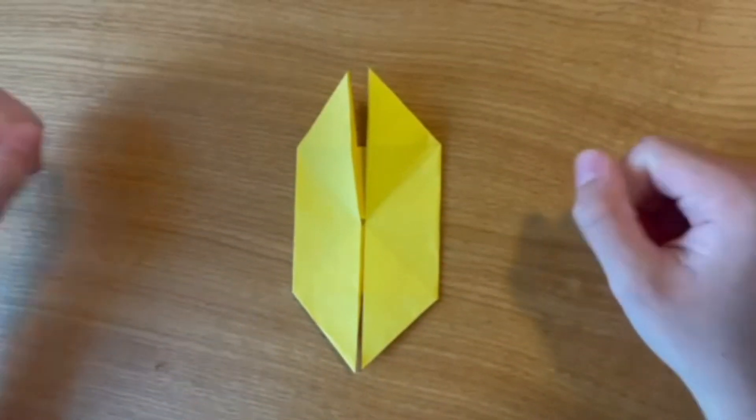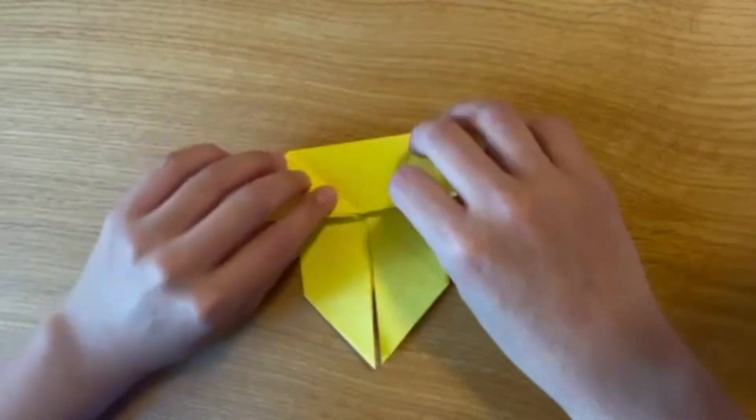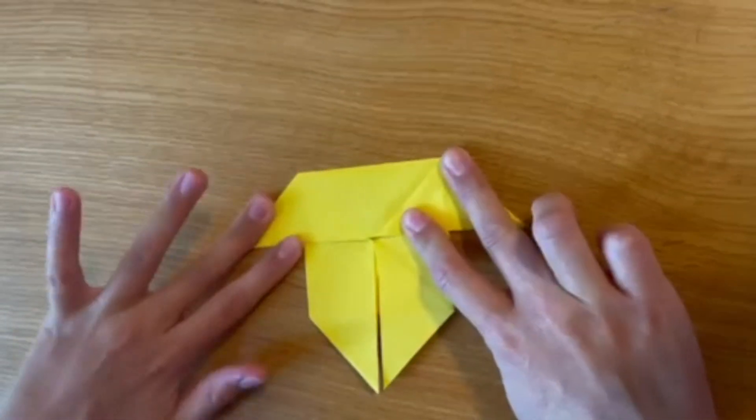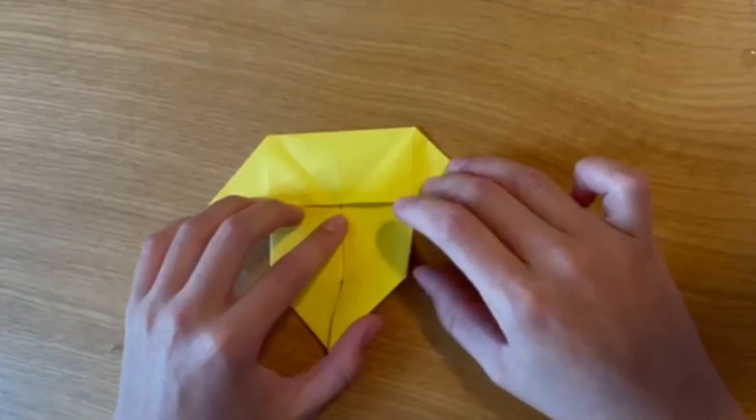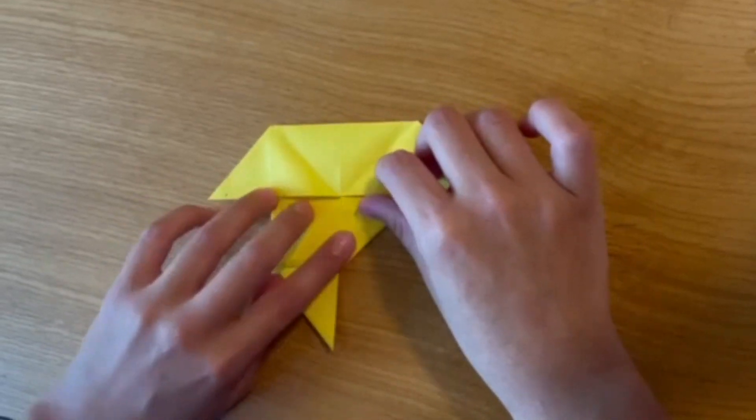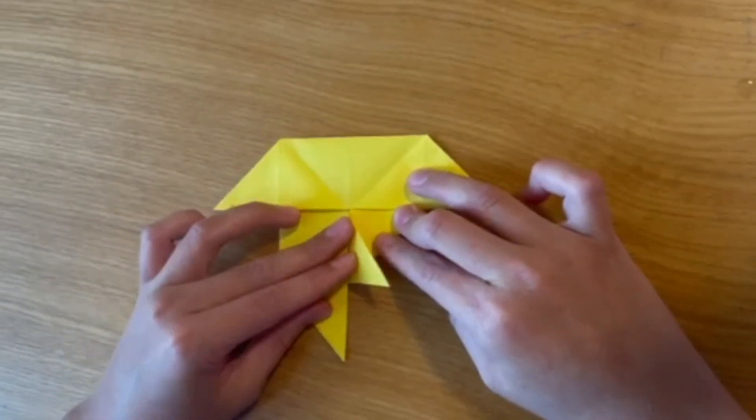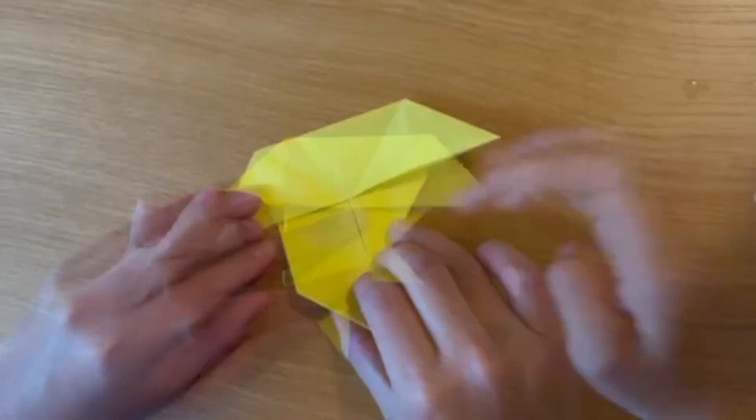Next you're going to get one of the flaps and fold it upward to meet this point of the paper. Then you're going to fold the tiny flap over it just like that. Now you're going to do the same to the other side.